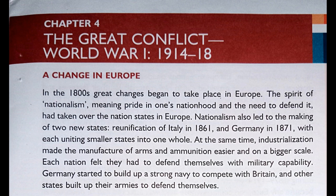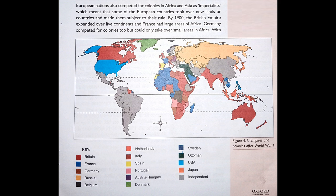At the same time, industrialization made the manufacture of arms and ammunition easier and on a bigger scale. Ammunition means a supply or quantity of bullets and shells. Each nation felt they had to defend themselves with military capability. Germany started to build up a strong Navy to compete with Britain, and other states built up their armies to defend themselves. European nations also competed for colonies in Africa and Asia as imperialists, which meant that some European countries took over new lands and made them subject to their rule.